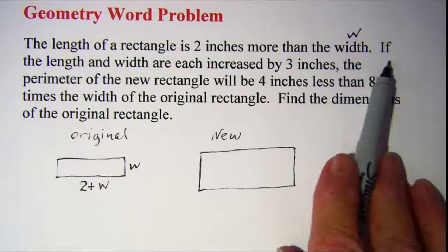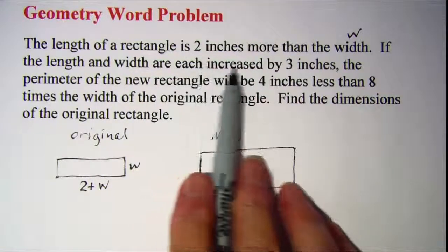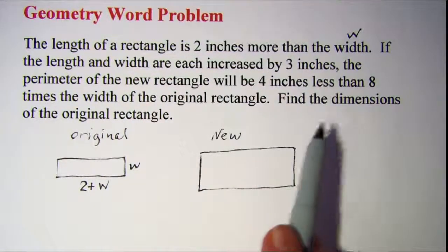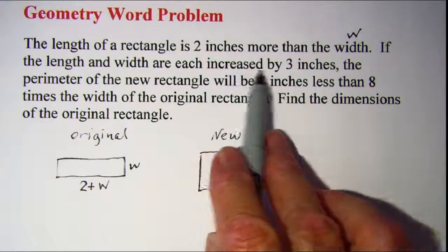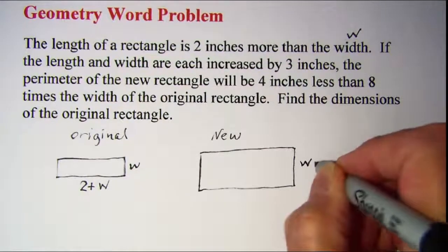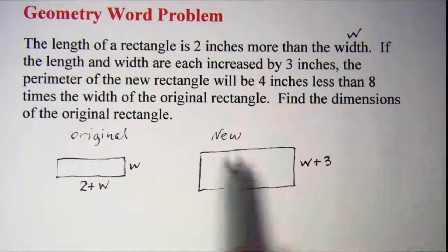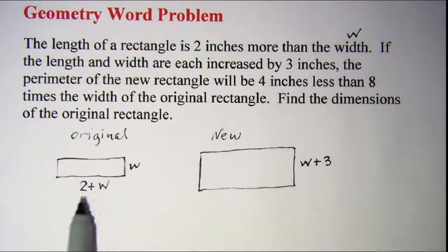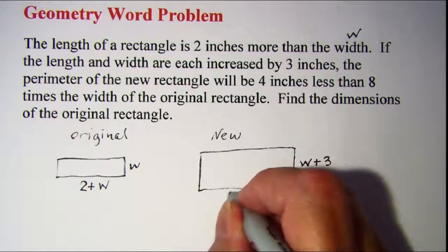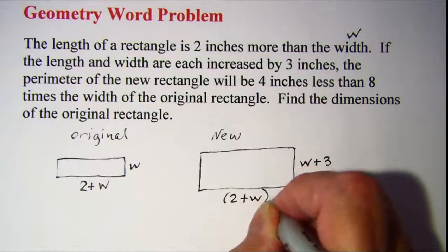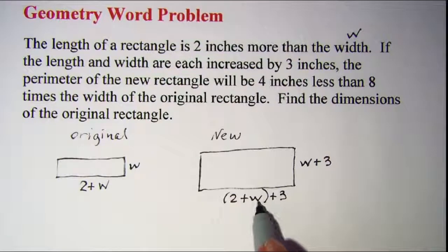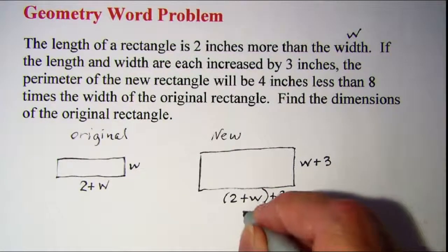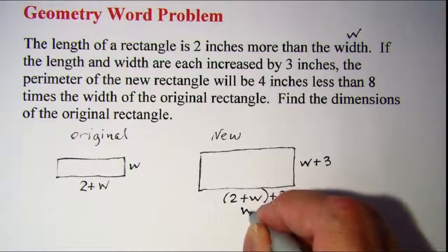Now let's look at the second sentence. If the length and the width are each increased by three inches, that means my new rectangle has a width which is w + 3. So my width of my new one is w + 3. And the length is also increased by three. So I need my original length which is 2 + w, and then I want to increase that by three. Now I can do the math here. Two plus three is five, so my length is actually w + 5.